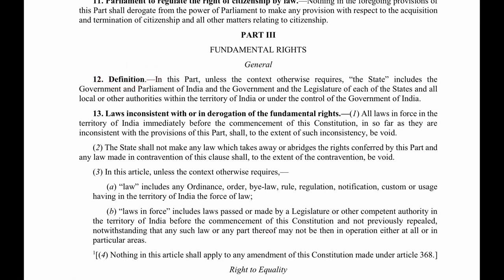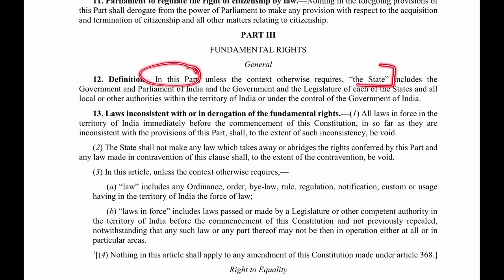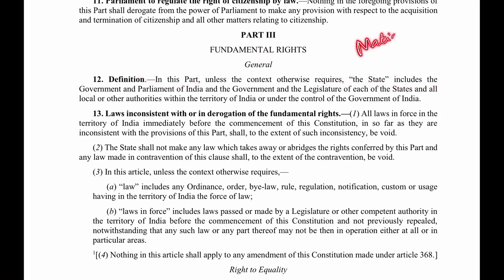Article 12 gives you the definition — that is why it is written as a general article. Article 12 tells us very clearly that in this part — Part 3, which is about fundamental rights — unless the context otherwise requires, meaning if any other specific context requires something else then that mention is different, but otherwise in this part the term 'state' is defined.